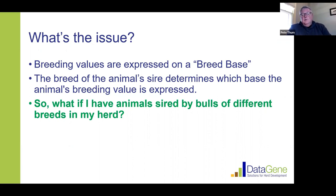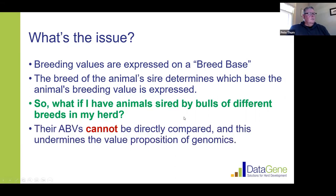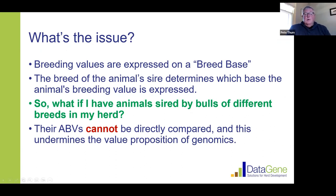It's a real issue confronting us at DataGene in terms of getting people to adopt genomics, particularly those with crossbred and mixed breed herds, because the results for those people aren't quite as meaningful as they are for people with straight-bred herds. So we've developed this Within Herd Ranking Tool to try and overcome that, to enable farmers to use genomic information to make better culling and breeding decisions within their herd.